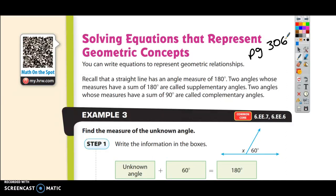Recall that a straight line has an angle measure of 180 degrees. Two angles whose measures have a sum of 180 degrees are called supplementary angles. Two angles whose measures have a sum of 90 degrees are called complementary angles.